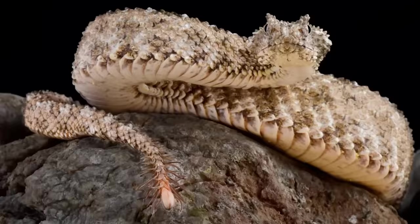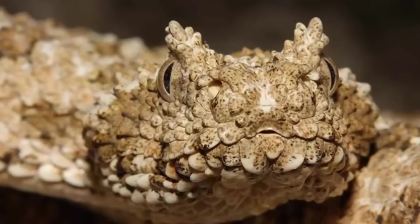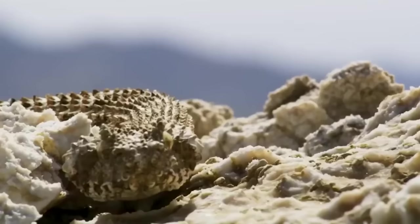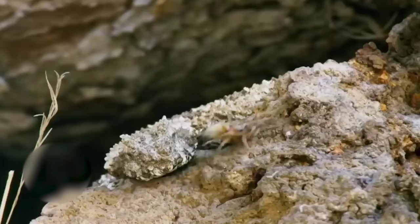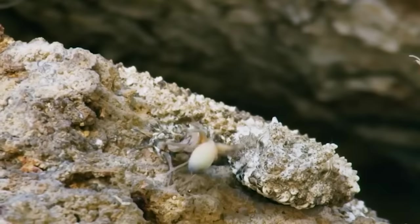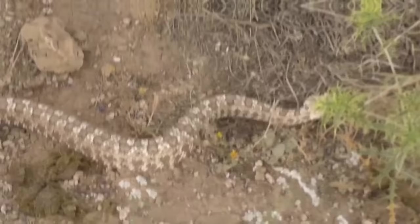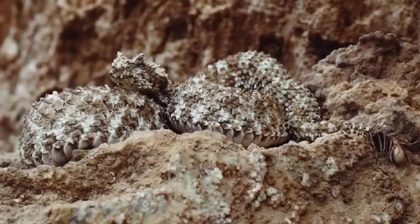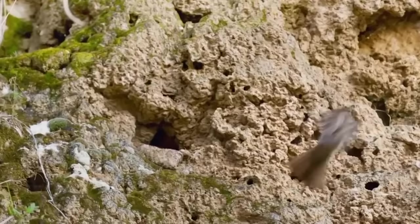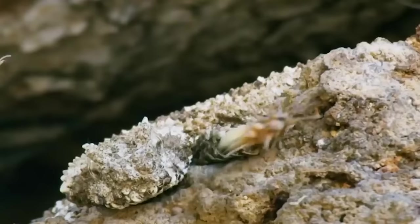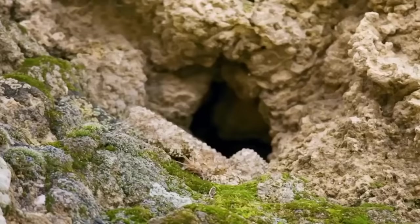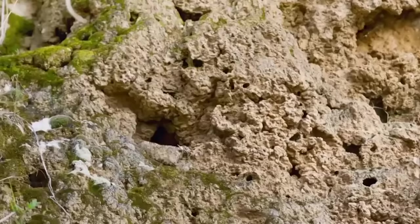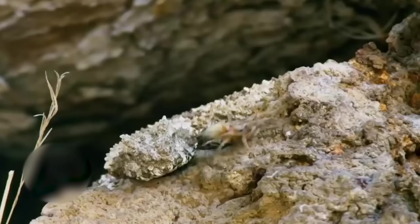Number 19: Spider-Tailed Horned Viper. Now this is a weird-looking snake. Apart from the knobbly appearance of their mottled white and beige skin, they're also in possession of a pair of so-called horns, and they have a bizarre adaptation at the end of their tails that looks like, well, you guessed it, a spider. The spider-tailed horned viper is native to Iran. It's especially well adapted to that particular landscape, where its coloring helps the reptile to camouflage perfectly against the limestone and gypsum rocks.